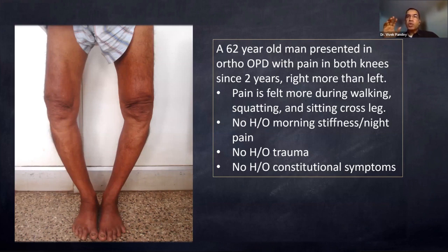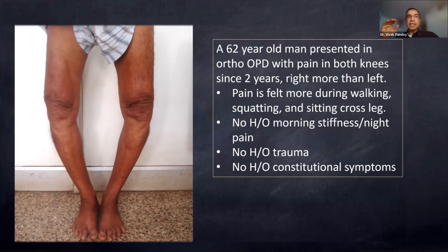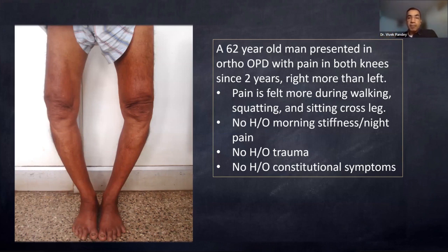Rest pain means you don't need activity — the pain is there anyway, and in fact is worse at rest. A resting pain, morning stiffness, or night stiffness lasting beyond three to four weeks is a sign of alarm in orthopedics. If a patient says 'I have night pain' or 'I'm stiff in the morning,' that needs evaluation. Mechanical pain — felt during walking, squatting, sitting cross-legged — is a sign of a degenerative condition like osteoarthritis.